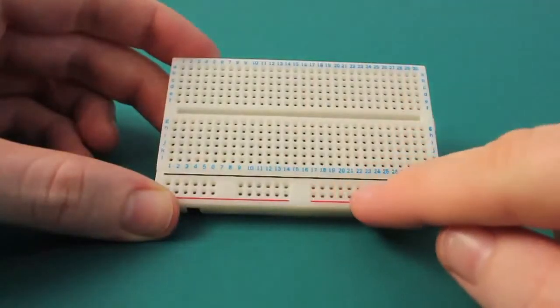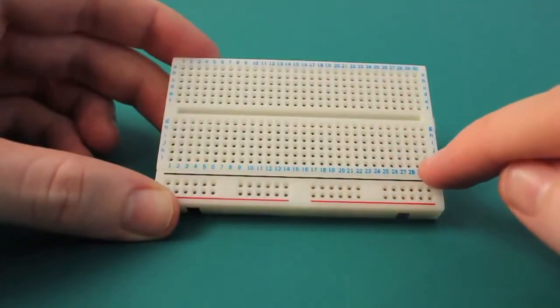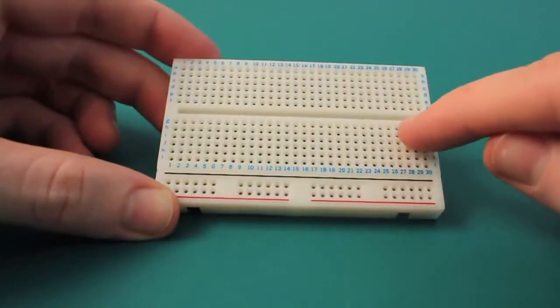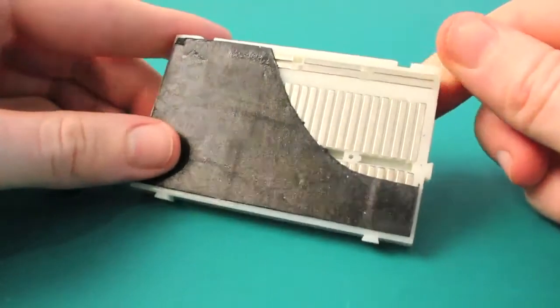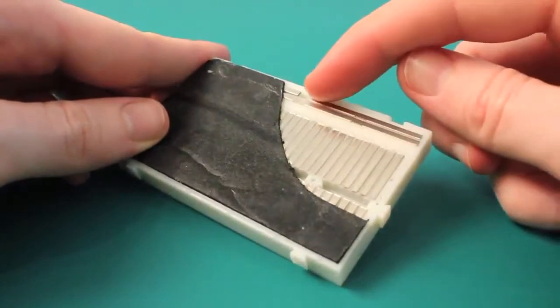So remember, power rails run horizontally and component rails run vertically. This means that components connected next to each other horizontally aren't connected electrically.